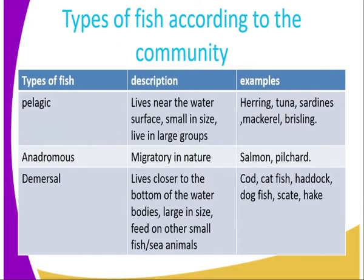Then we have the demersal fish. These fish live closer to the bottom of water bodies. They are large in size and they feed on other small fish or sea animals. Examples of demersal fish include the cod, catfish, dogfish, and skate.